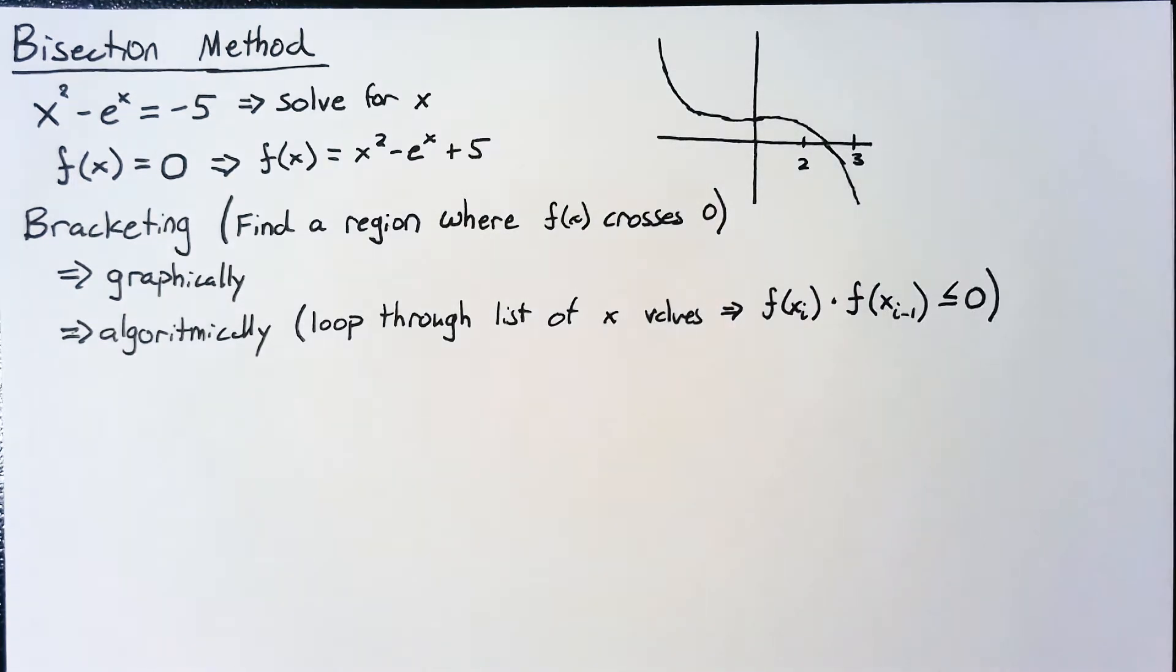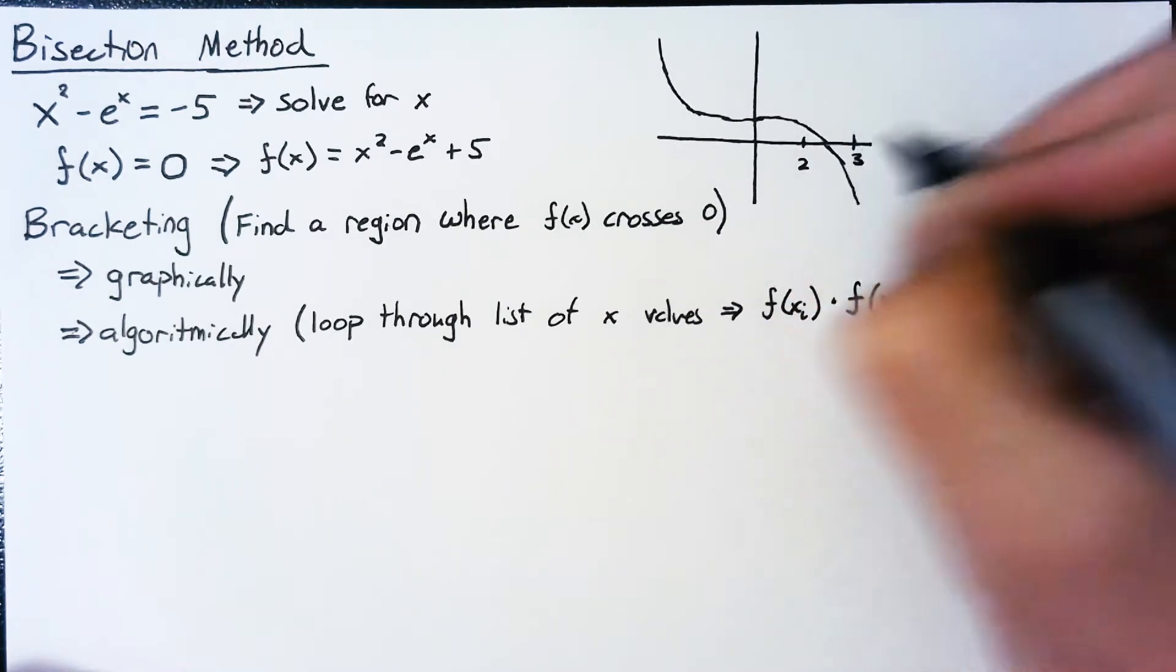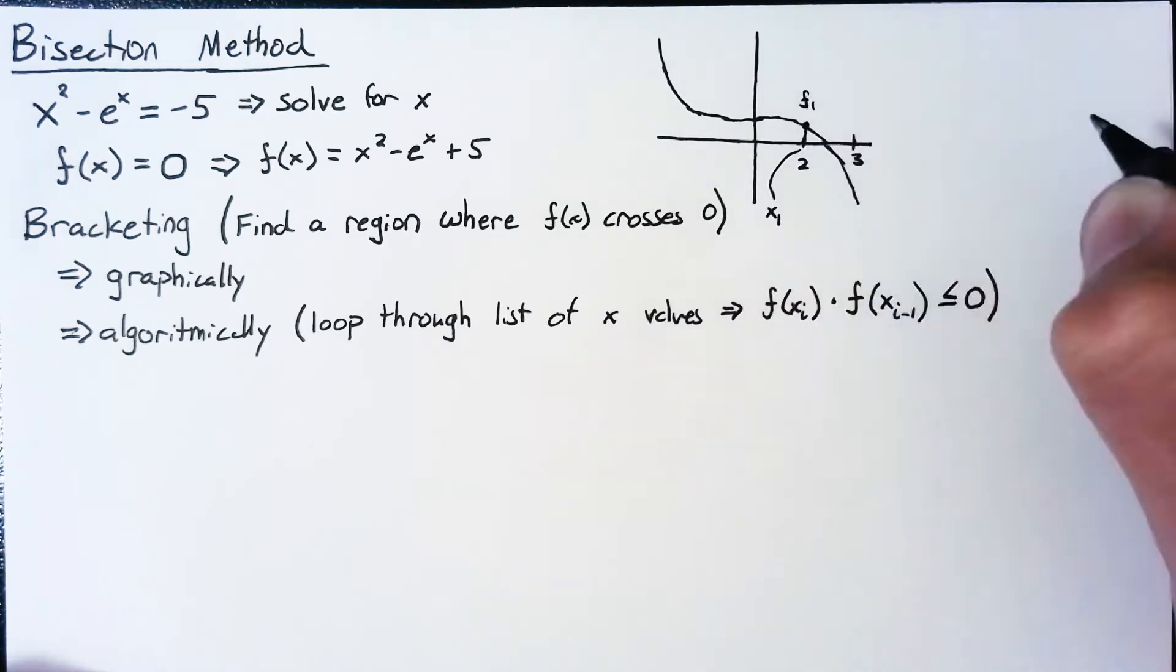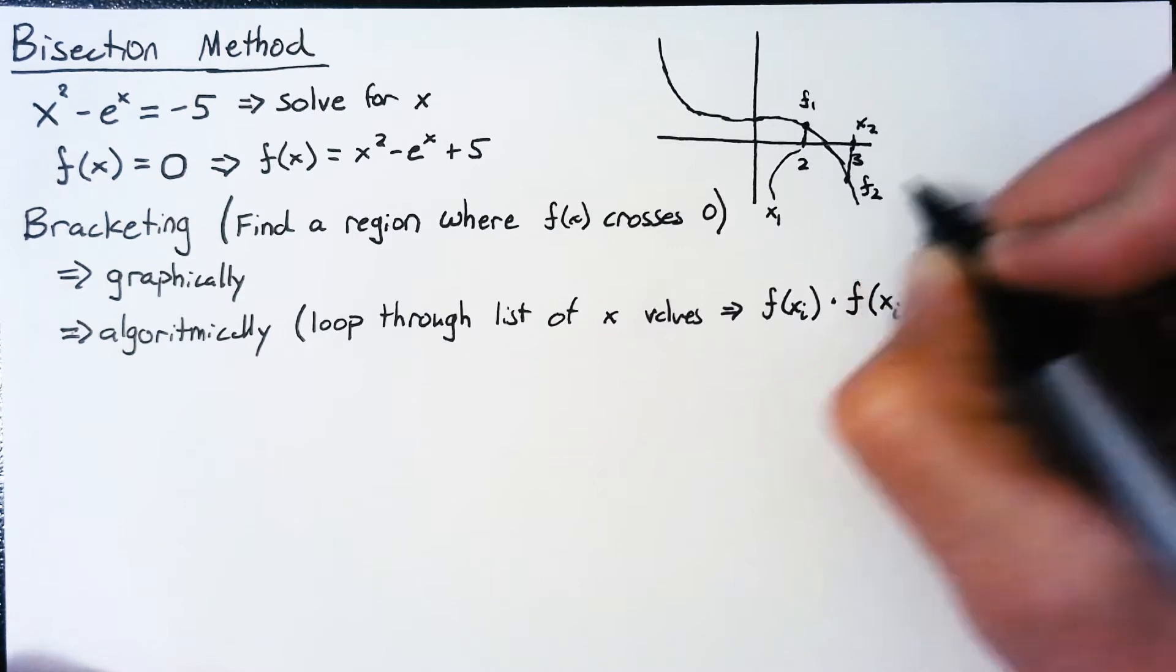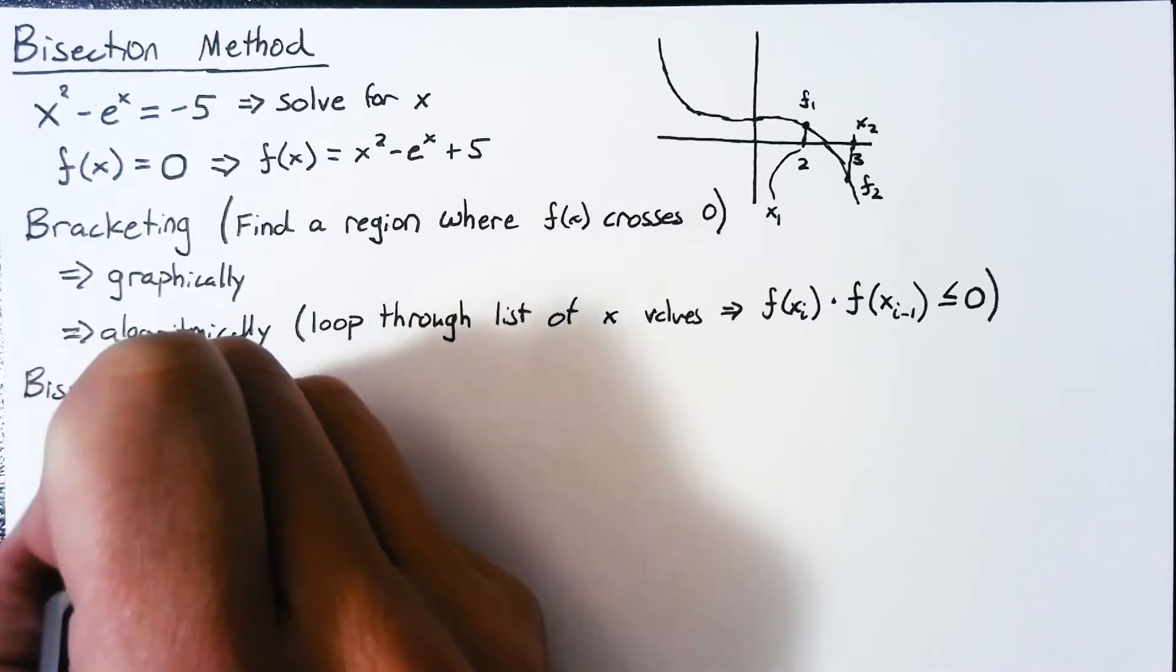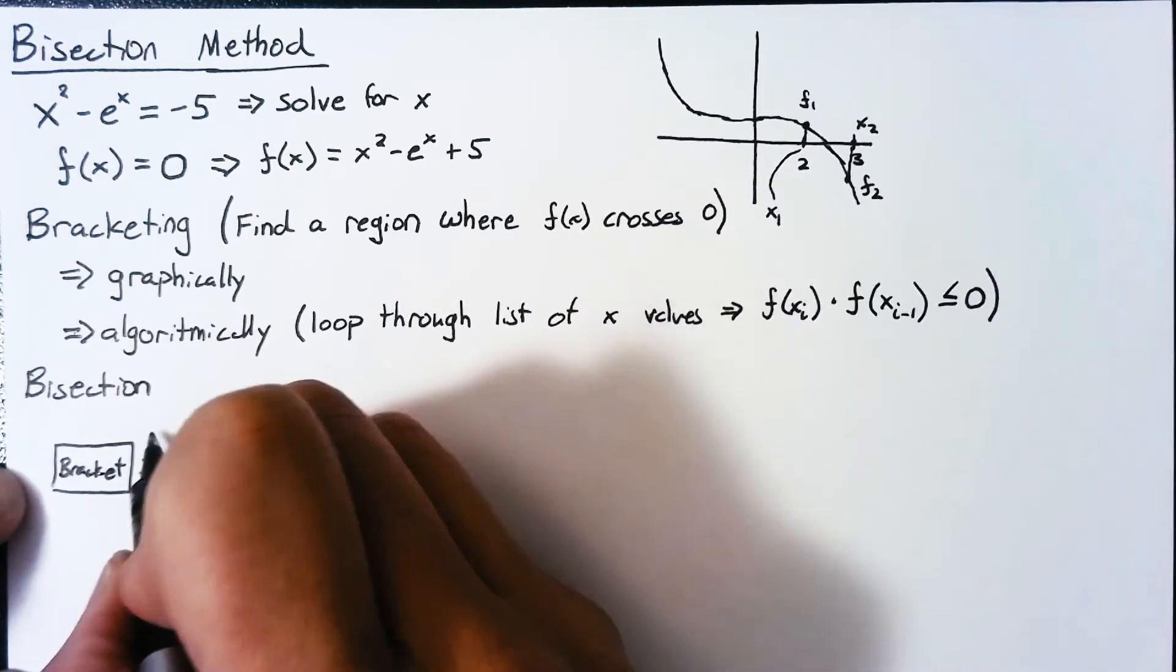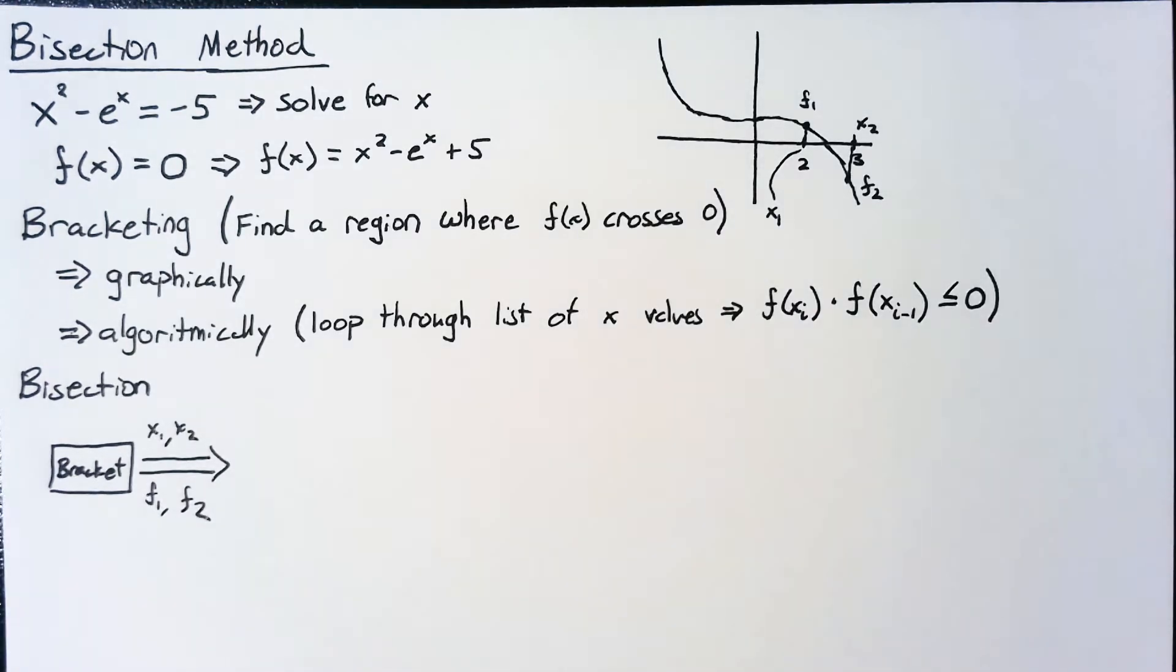So once we have a bracket, once we know some values, here we could choose 2 and 3 as our initial x values. We could assign this value as x1 and the corresponding function would be f1. This value here, we would call x2 and we could call the corresponding function f2. So you see that we've done our bracketing, and out of our bracket comes this x1 and x2 alongside our f1 and f2 values.